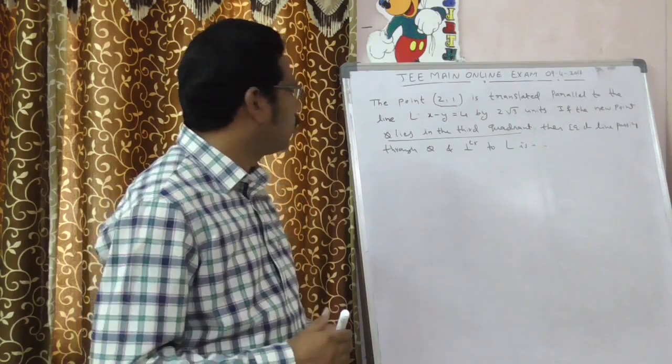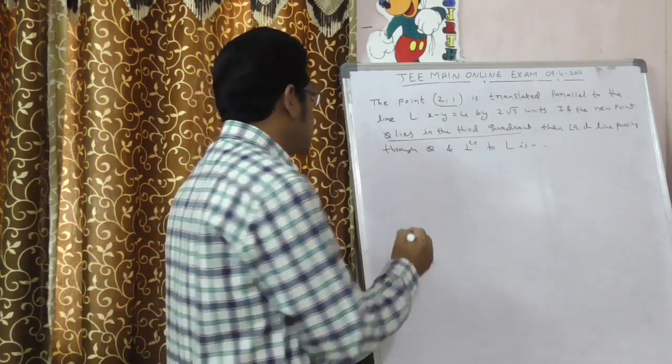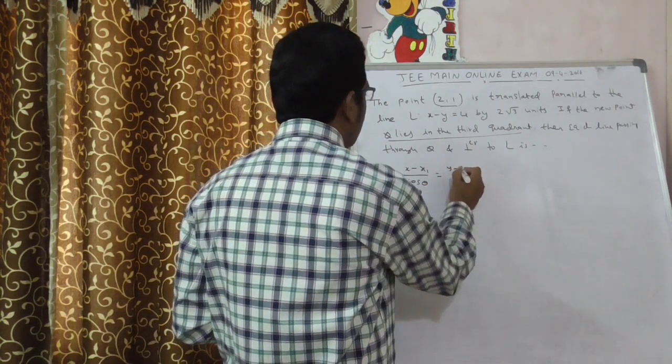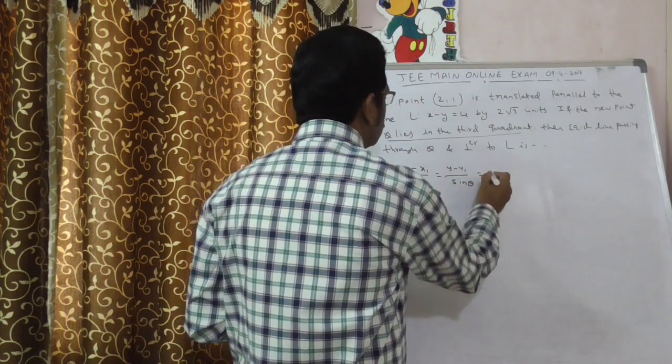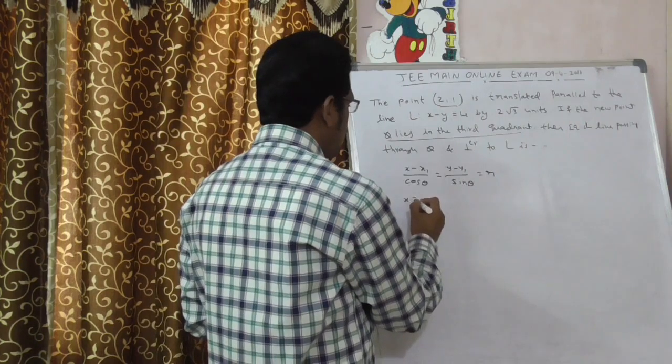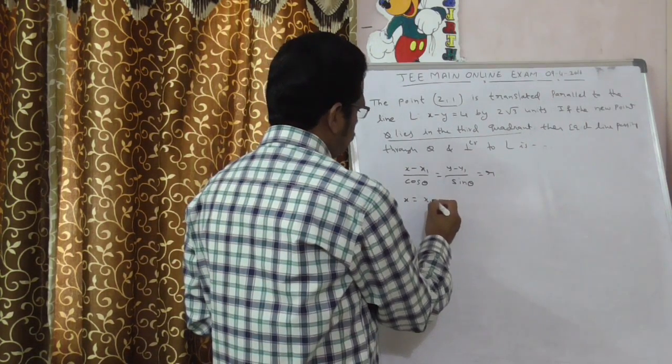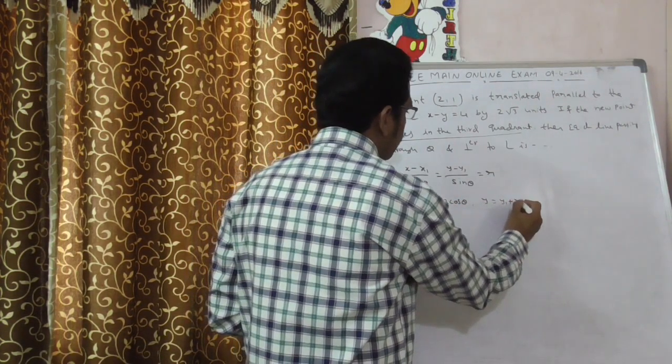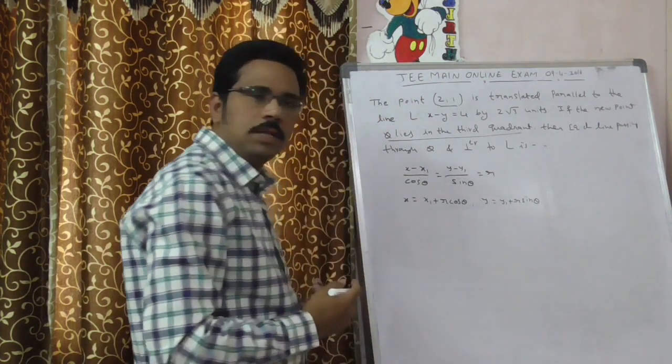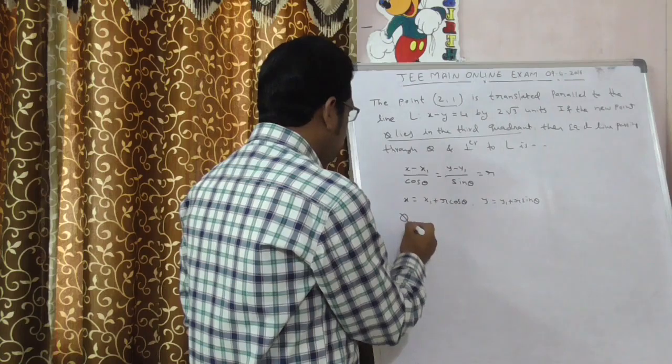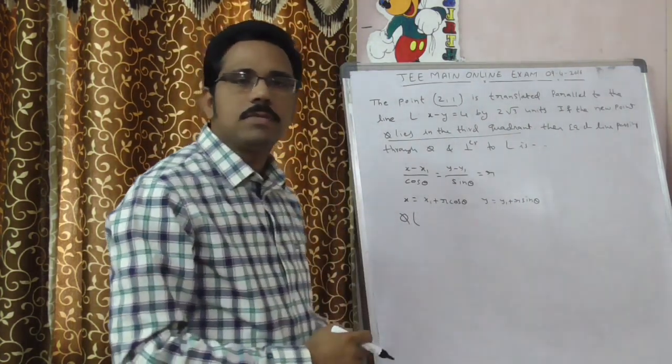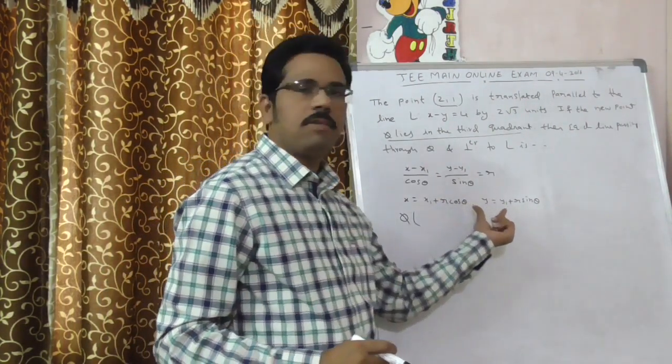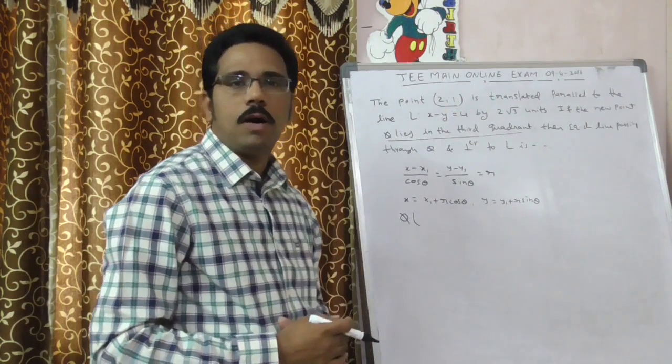To solve this question, I am going to apply symmetric form or distance form of a straight line. What is symmetric form of a straight line? That is x minus x1 by cos theta is equal to y minus y1 by sin theta is equal to r. By using this, you can write x is equal to x1 plus r cos theta and y is equal to y1 plus r sin theta. Therefore, the required new point q should be in the form of x1 plus r cos theta and y1 plus r sin theta.